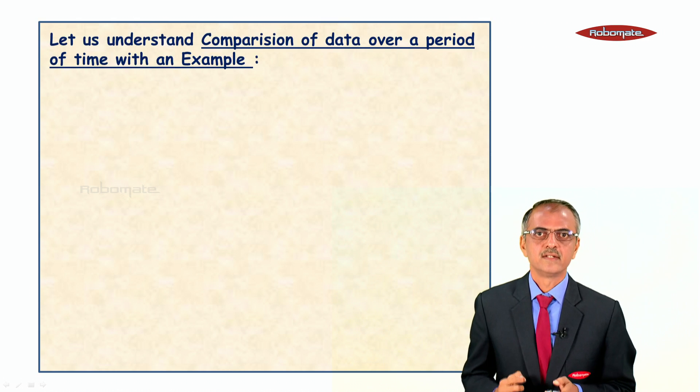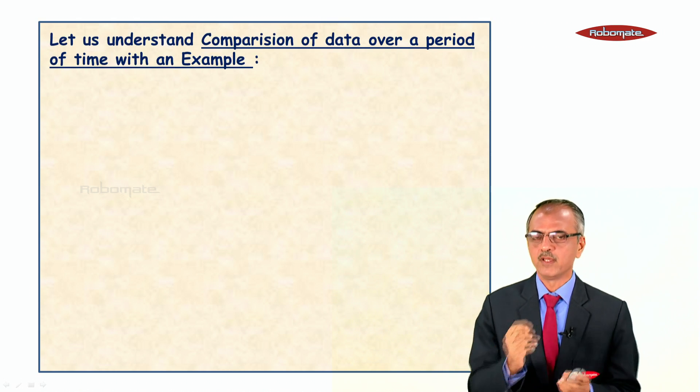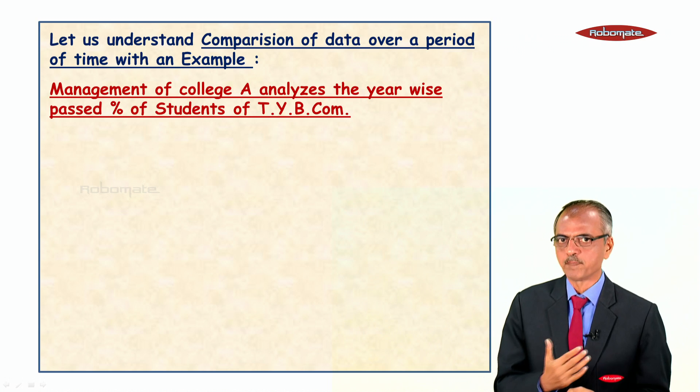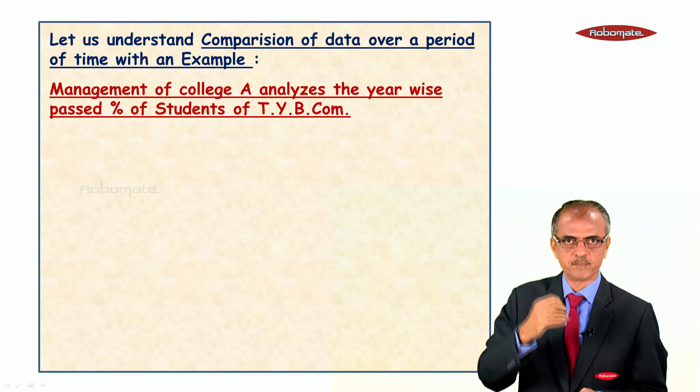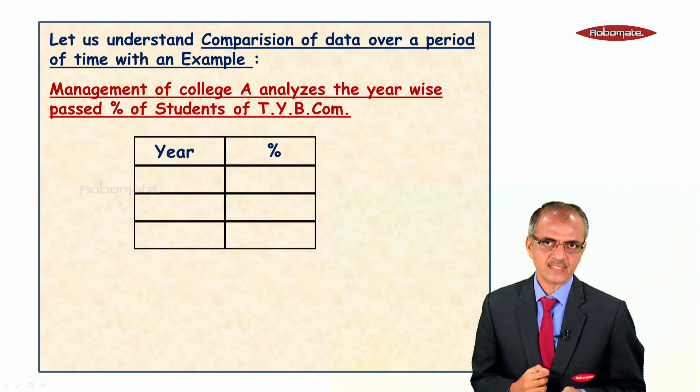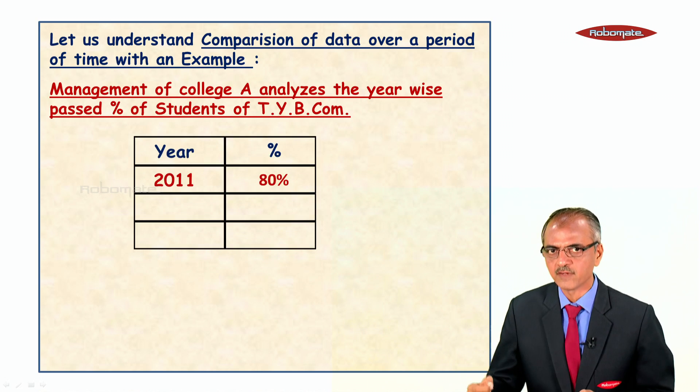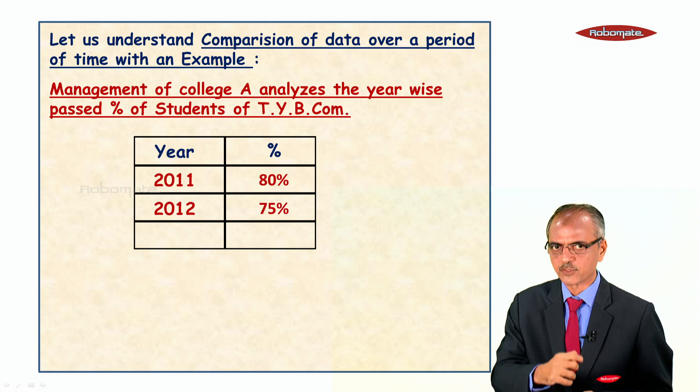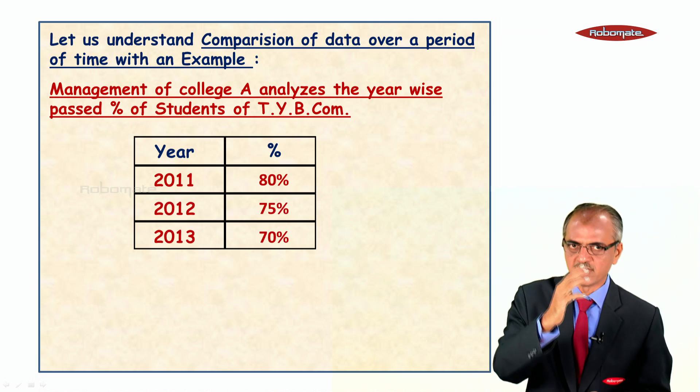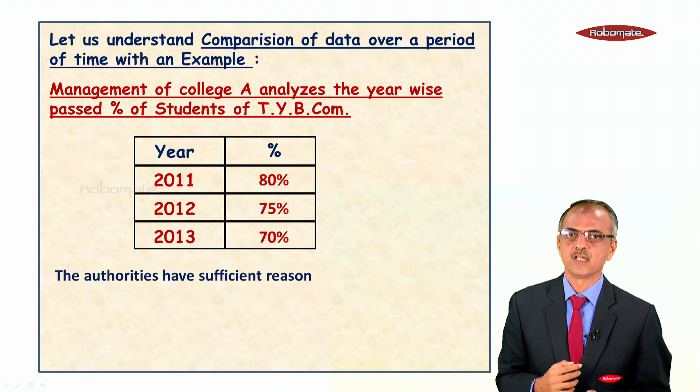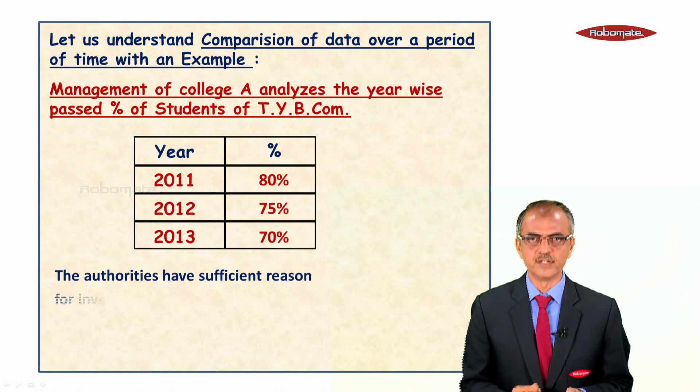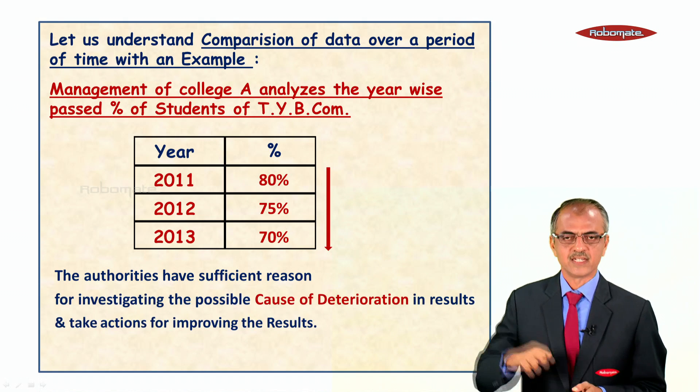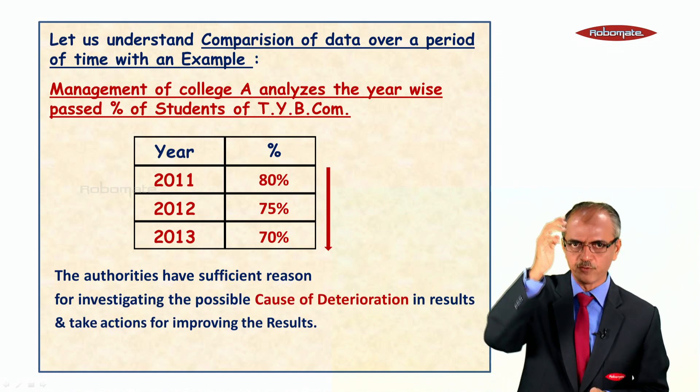Let us understand the comparison of data over a period of time with an example. Management of College A analyzes the year-wise pass percentage of students of TYBCOM. In 2011, 80 percent of students passed; in 2012, 75 percent passed; in 2013, 70 percent passed. The authorities have sufficient reason for investigating the possible cause of deterioration in the results and take actions for improving the results.